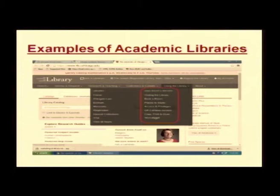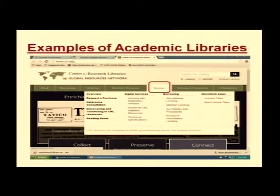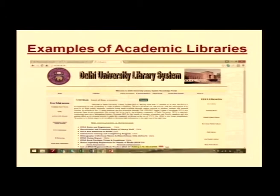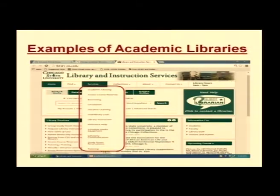Some examples of academic libraries include the University of Chicago Libraries, which provides different types of services, and the Center for Research Library. Delhi University Library System has an online library system where you can reserve books, search catalogs, and access resources via remote access. Chicago State University Libraries clearly shows the types of services they provide to their clientele.